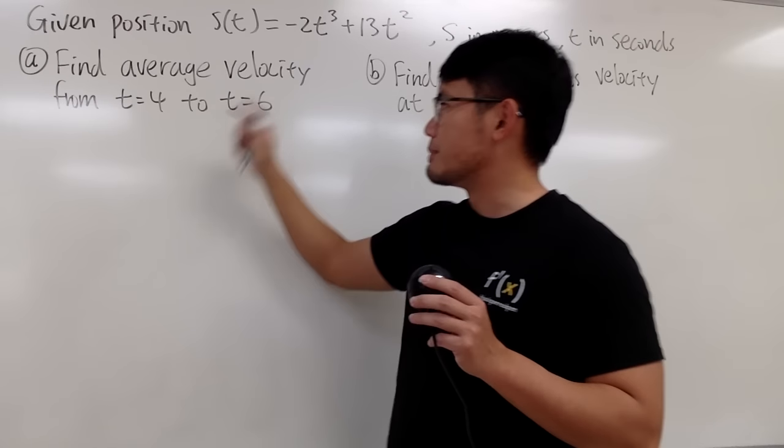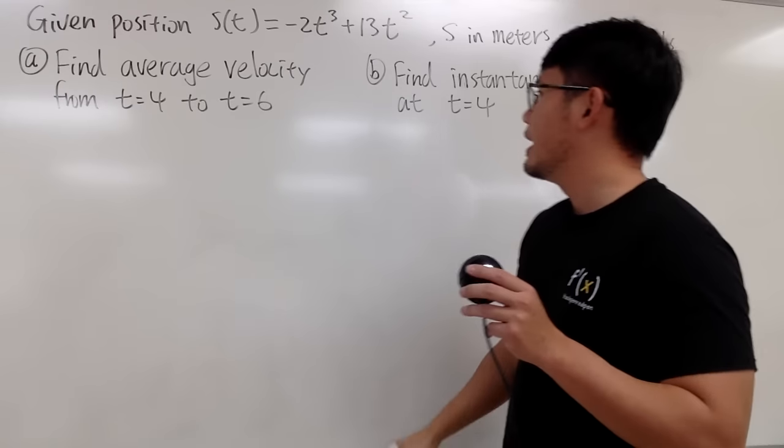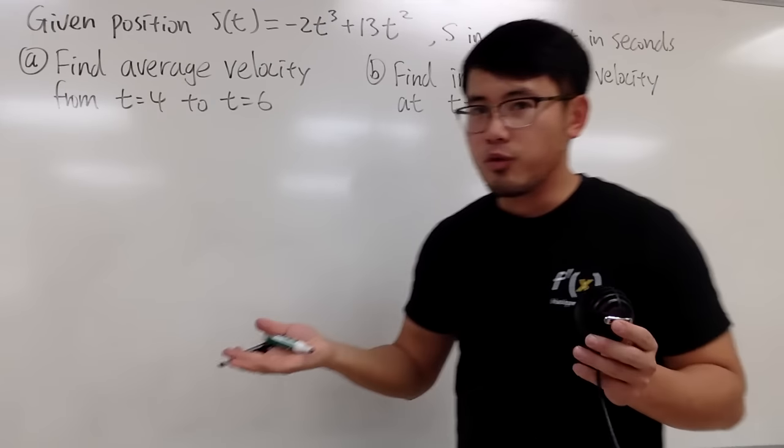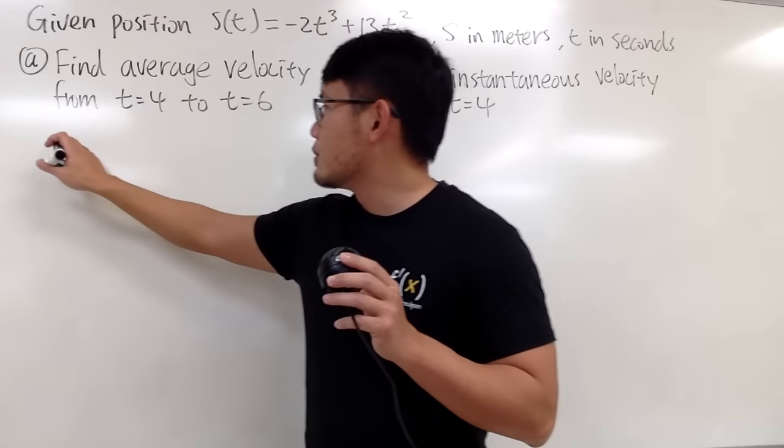First, we are going to find the average speed from 4 to 6, and this right here is the slope formula pretty much. So I will just write this down right here, V average.